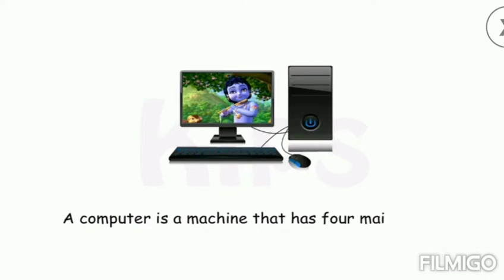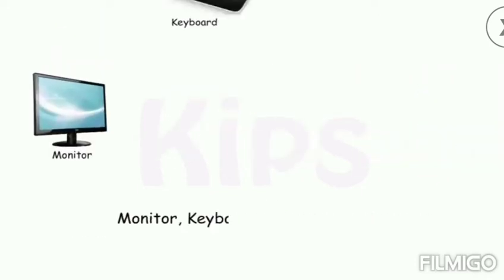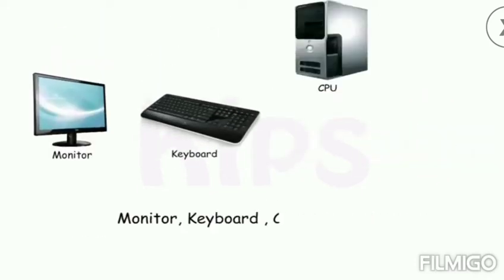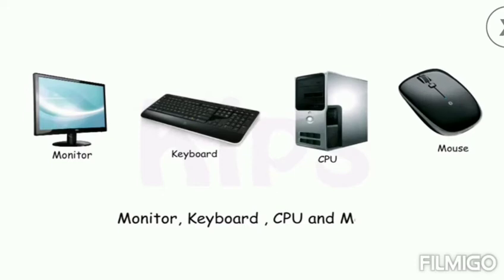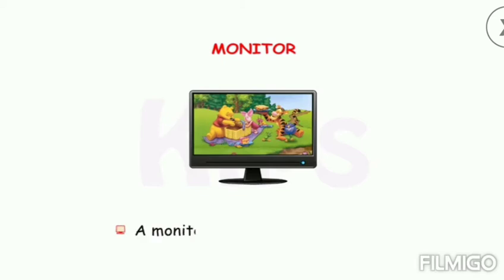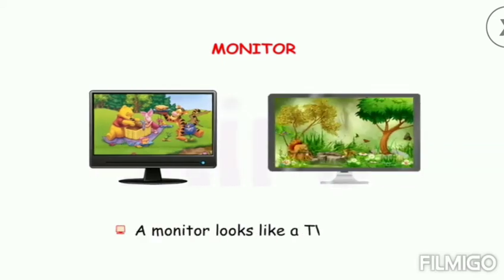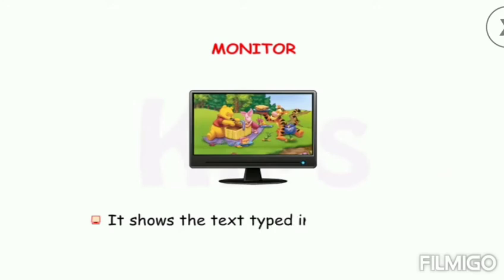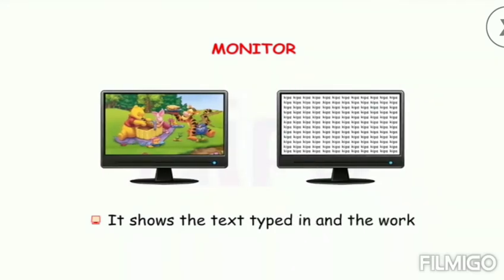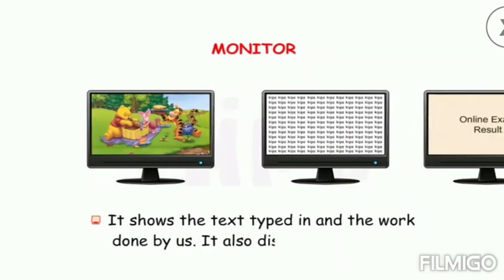A computer is a machine that has four main parts: monitor, keyboard, CPU, and mouse. Let us first start with the monitor. A monitor looks like a TV screen. It shows the text typed in and the work done by us.